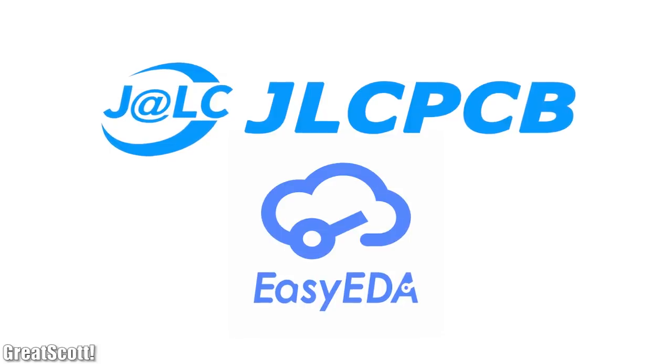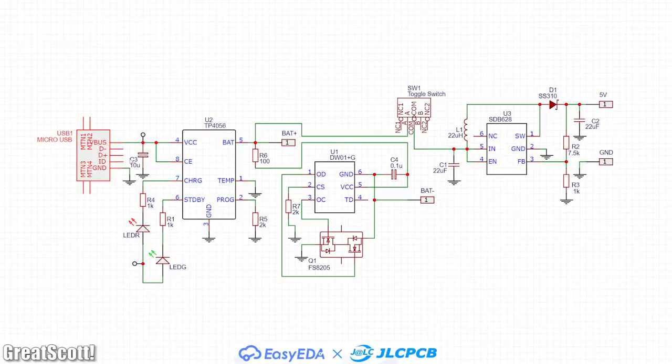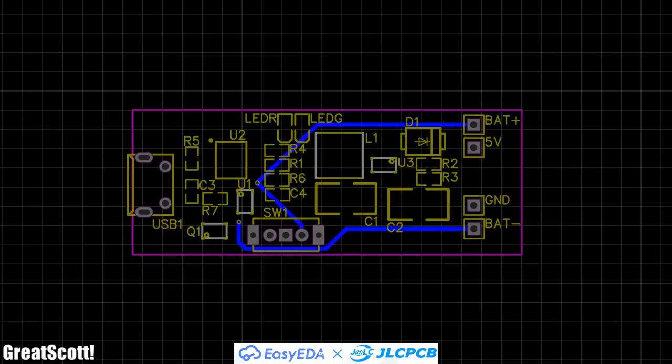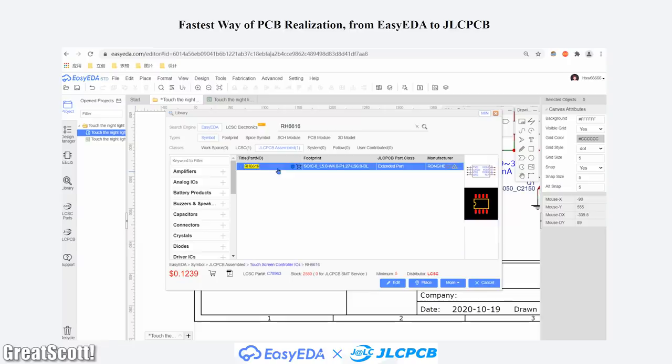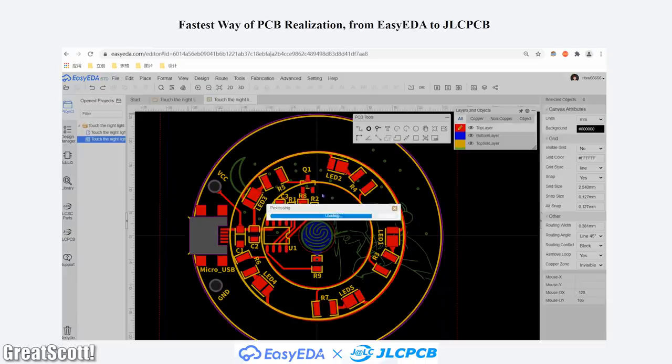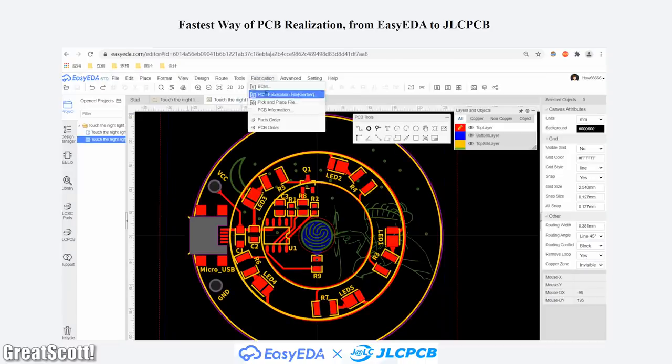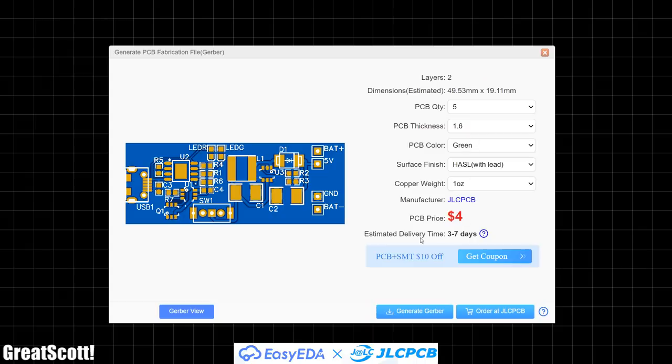This video is sponsored by JLCPCB and EasyEDA. As you might know I have been using the EasyEDA schematic and PCB design software for years. And now I am happy to announce that when you are finished with your PCB design that includes an SMT assembly service, you can like always directly order your PCBs through JLCPCB but now you get a $10 coupon while doing so. So feel free to join the EasyEDA and JLCPCB user group today.